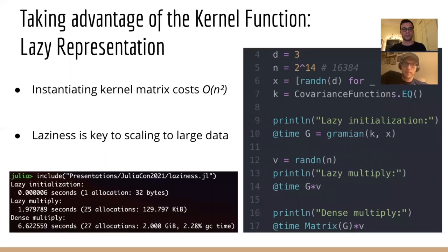And the first difficulty we encounter here is that merely instantiating a kernel matrix costs O of n squared operations for n data points, which is prohibitively large for large n. We can avoid this with a special matrix type that represents the matrix lazily, only stores the kernel function and the data, and delays the evaluation of the kernel elements until required.